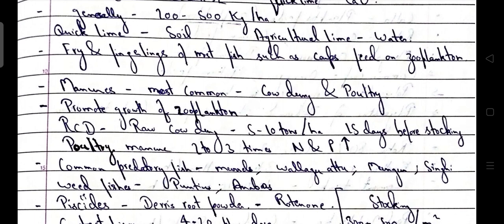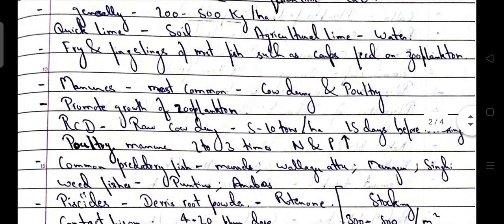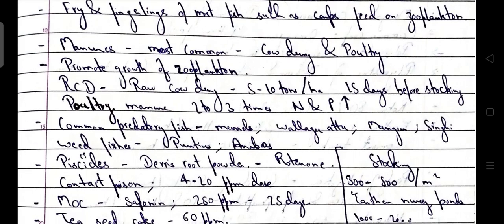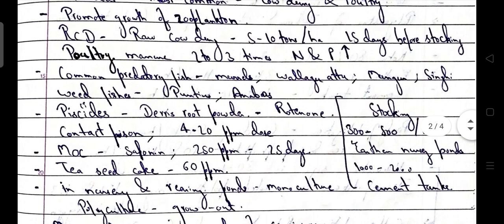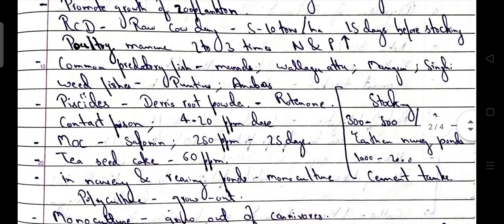Fry and fingerlings of most fish such as carps feed on zooplankton. The most common manure is cow dung and poultry manure, which promotes the growth of zooplankton. Raw cow dung: 5 to 10 tons per hectare, 15 days before stocking. Poultry manure has 2 to 3 times higher concentration of nitrogen and phosphorus compared to other manures. Common predatory fish include murrels, wallago attu, magur, and singhi. Weed fishes include Puntius and Anabas.